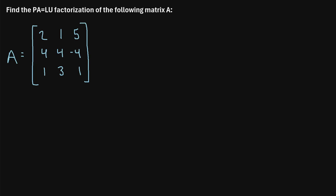In this video I will explain how to find the PA equals LU factorization of a matrix. So let's jump right into an example. We need to find the PA equals LU factorization of the following matrix A, which has three rows and three columns. To do this, we first need to know what each of these letters stand for.